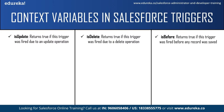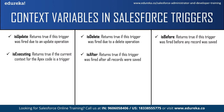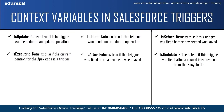After isBefore we have isExecuting — this returns true if the current context for the Apex code is a trigger, and not a Visualforce page, a web service, or an API call. The next context variable is isAfter — this returns true if the trigger was fired after all the records were saved to the database. Next is isUndelete — this returns true if the trigger was fired after a record was recovered from the recycle bin.